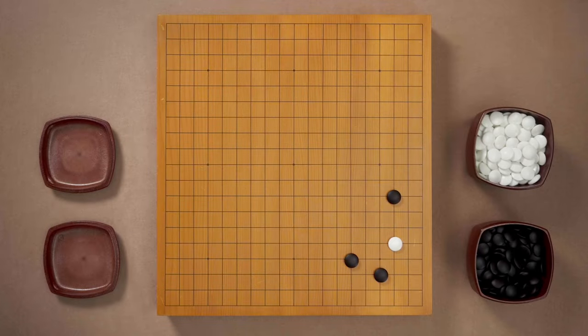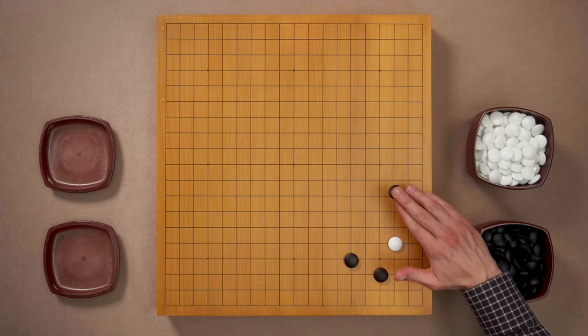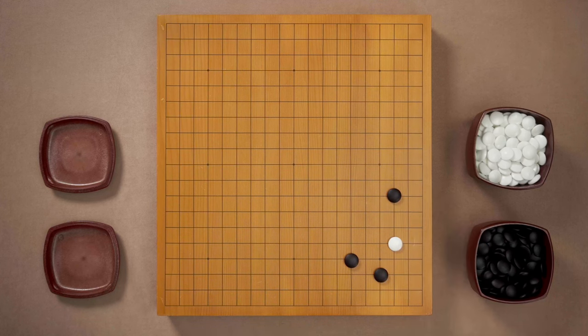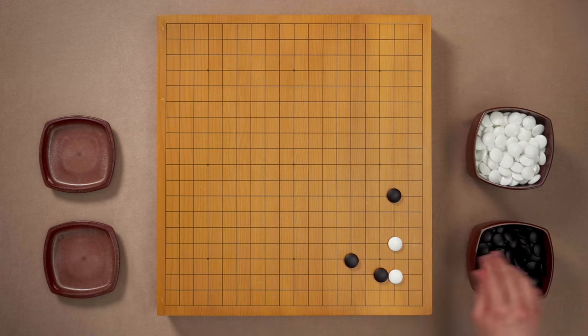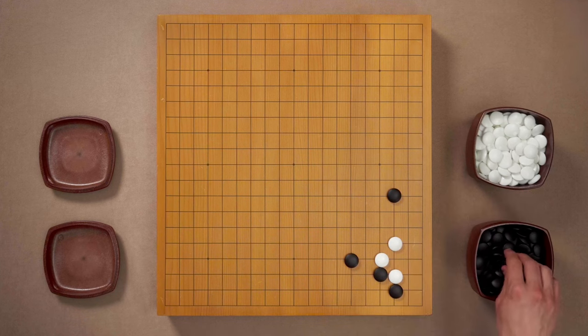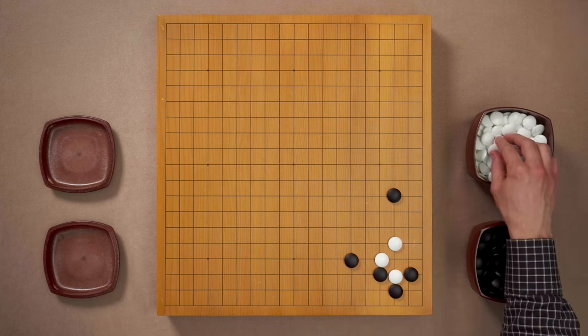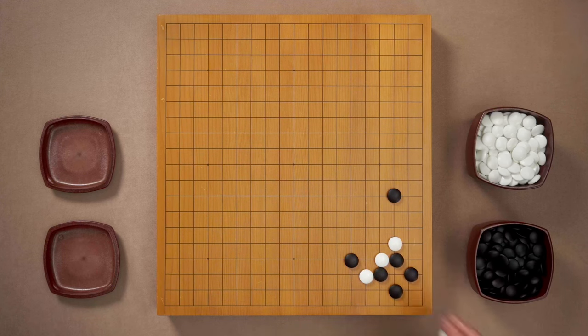Perhaps even clearer example of this principle can be met in this common joseki. This is a position which can happen after a common corner approach after which white played elsewhere and black played a pincer. Now white could attach. Black doesn't want to give white the corner and then white sacrifices one stone and in exchange white splits black stones. And what to play next?